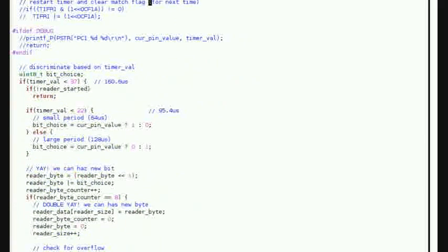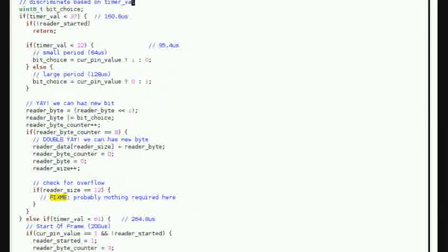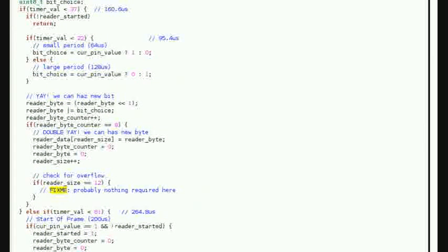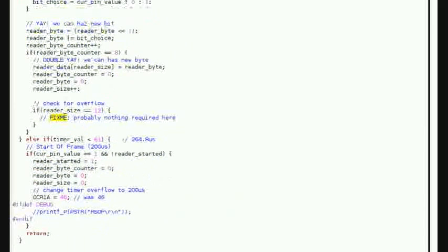When we're trying to send the information to the car, we use the other timer to decide when we want to change the pin voltage depending on whether we want to send a zero or a one.